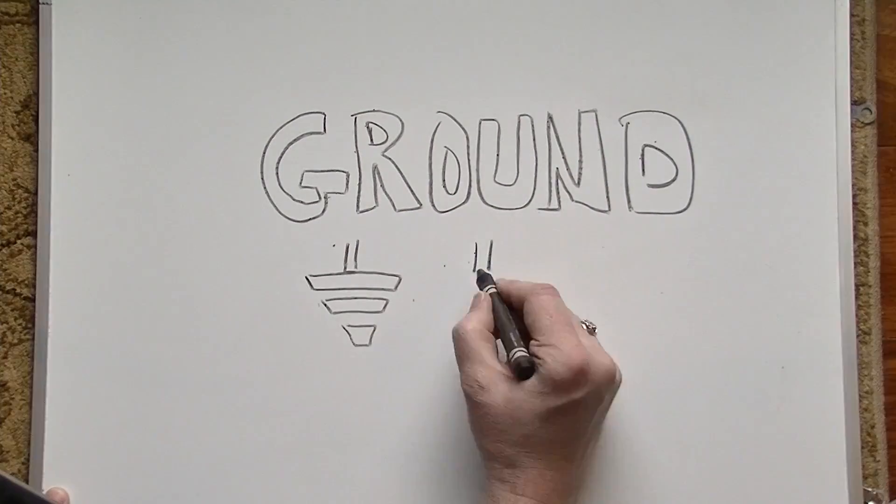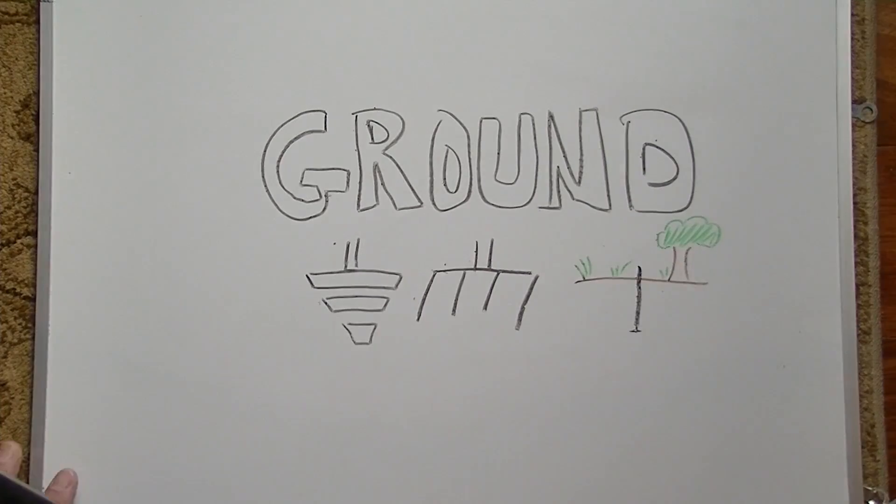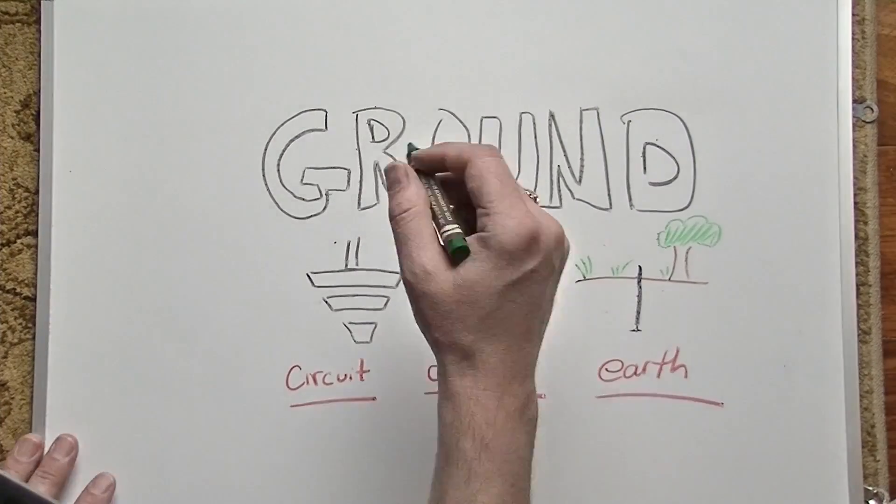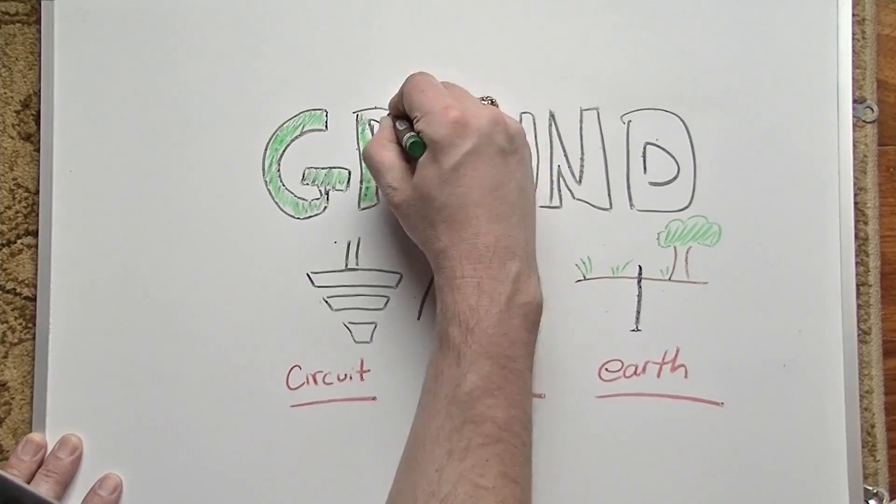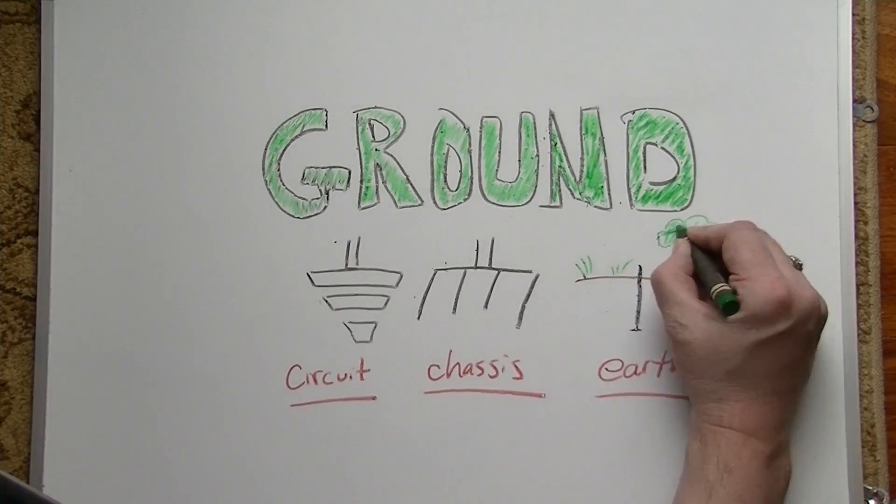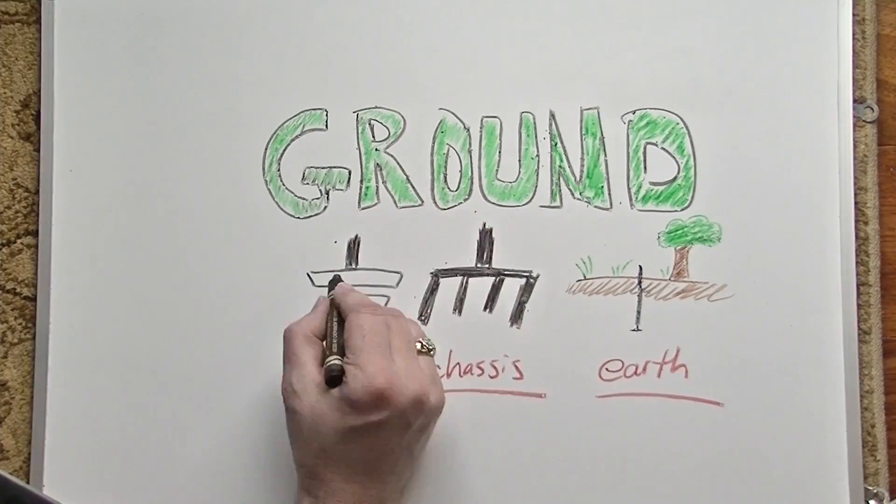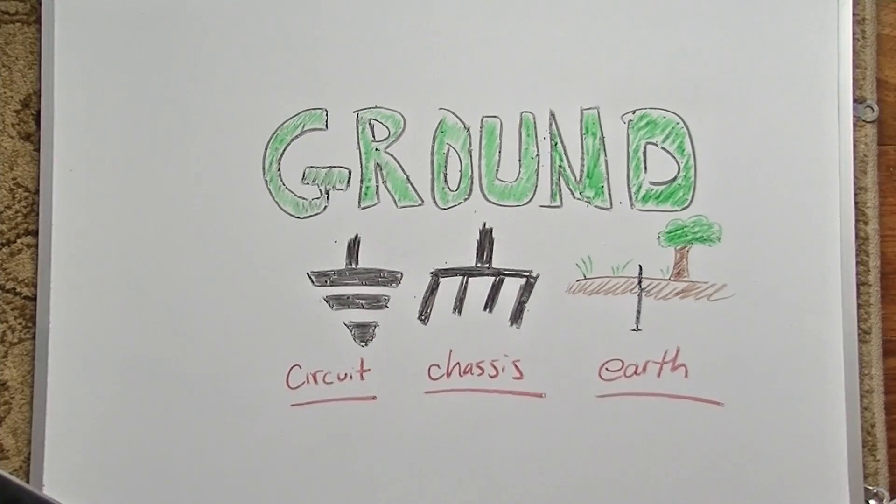Grounding schemes both inside individual pieces of equipment, such as guitar amplifiers, and among many pieces of equipment, such as in a studio or office, are important—especially if you're trying to troubleshoot or prevent noise caused by electromagnetic interference.